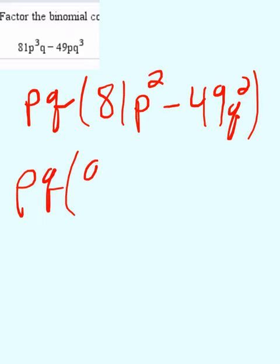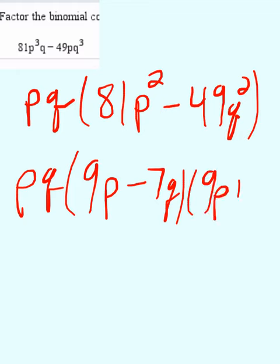And then to get 81, we'd have to take 9 squared. To get p squared would be p, so it would be 9p. And then 7q and 9p plus 7q. And then that would be our answer.